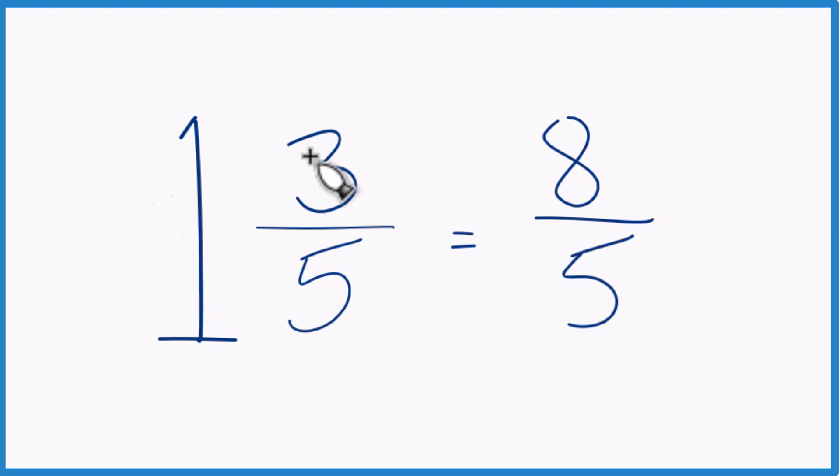The mixed number 1 and 3 fifths equals the improper fraction 8 fifths. It's improper because the numerator is larger than the denominator. Let's do it again.